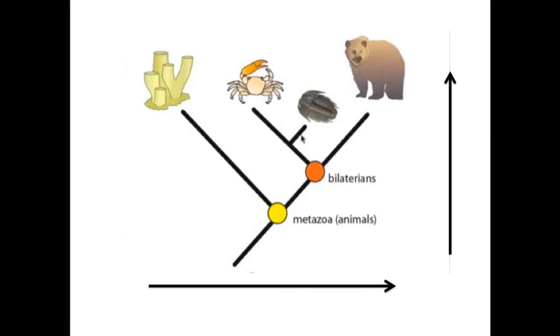It's called the bilatarians, which just means that the animals have a line of symmetry like left to right or top to bottom. This dot represents the last common ancestor of all the bilatarians.